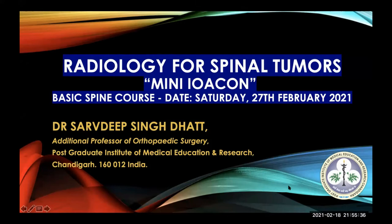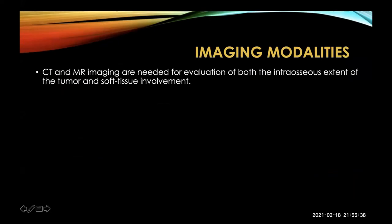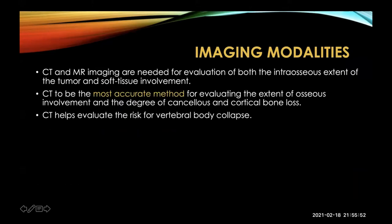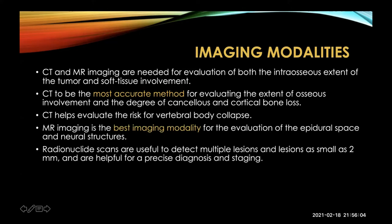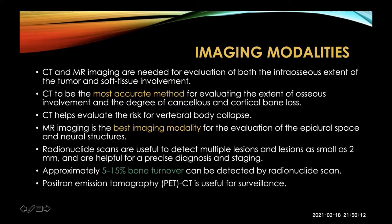When you talk about spinal tumors, it's very important to get good imaging done. CT scan and MRI are the basic requirements to diagnose these tumors. CT is very good for evaluating the amount of osseous involvement, the degree of cancellous and cortical bone loss, and evaluating the risk for vertebral body collapse. MRI is the benchmark — the gold standard — used to evaluate the epidural space as well as soft tissue involvement of the neural structures. You can also do radionuclide scans and PET scans, which are used for surveillance and picking up small metastases down to about two millimeters.